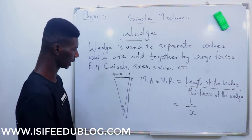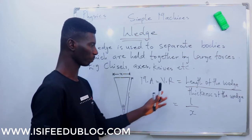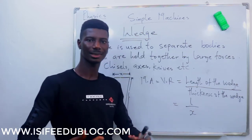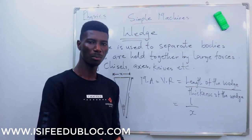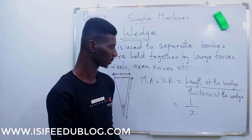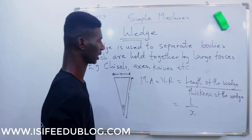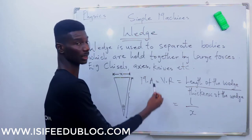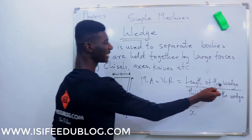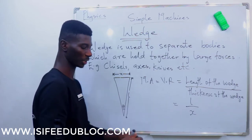Remember, velocity ratio means the distance moved by effort over the distance moved by load. The distance moved by effort is the length of the wedge.